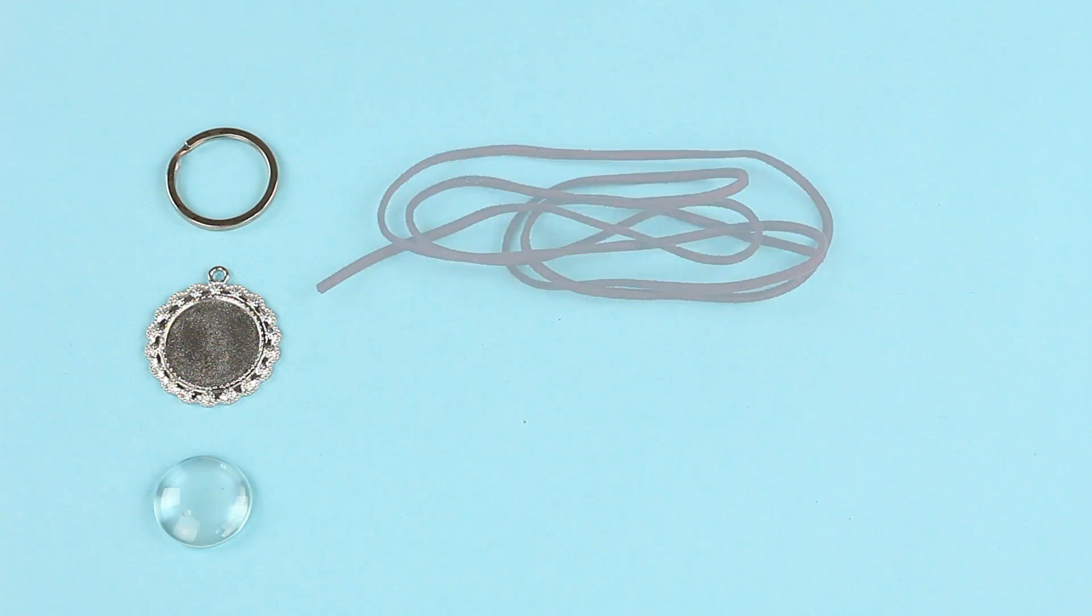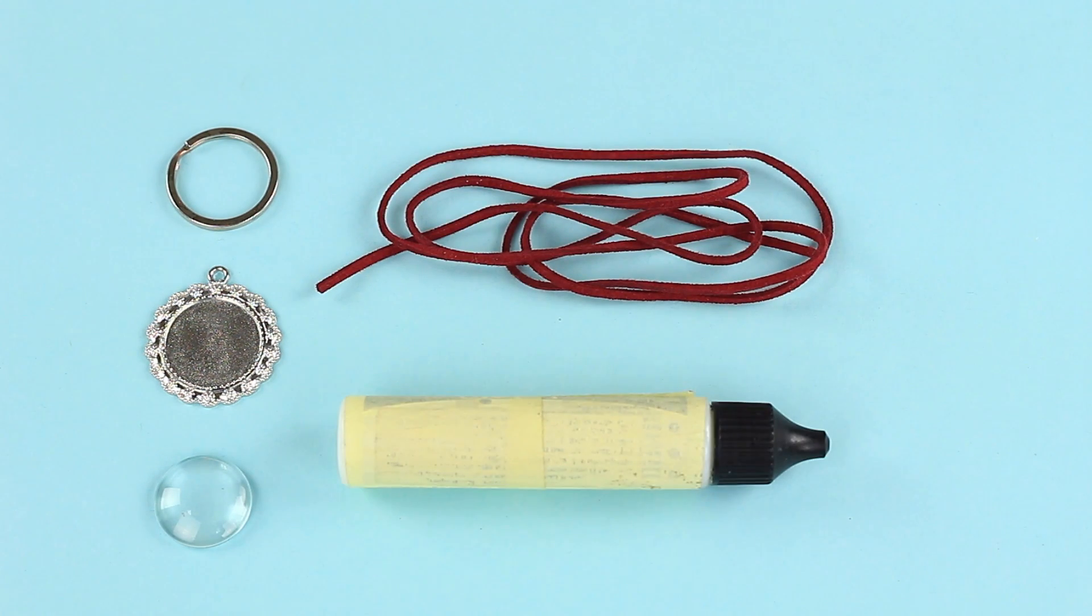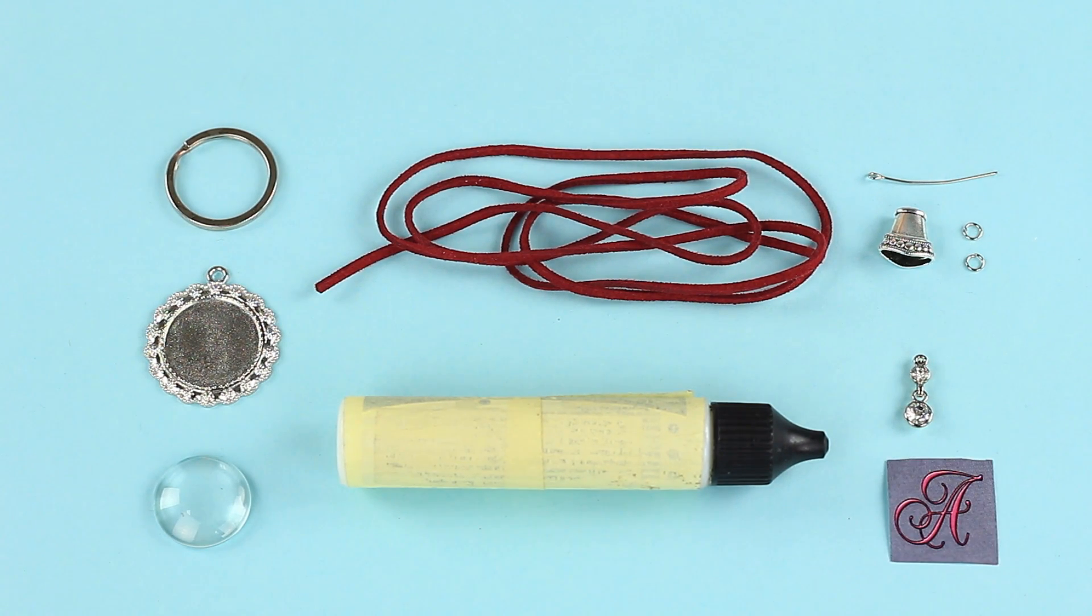We'll need a metal keychain ring, filigree frame metal bezel setting, a keychain glass disc, suede cord, glass adhesive, metal edge cone cap, jewelry supplies, a crystal charm, and a printed out head letter of your name.